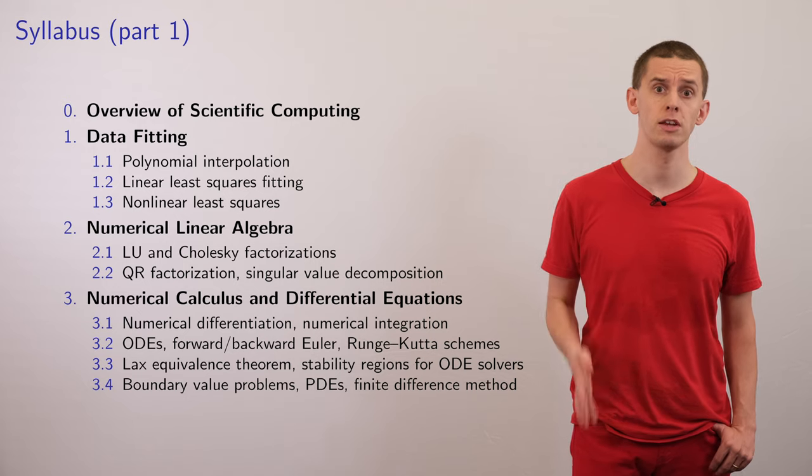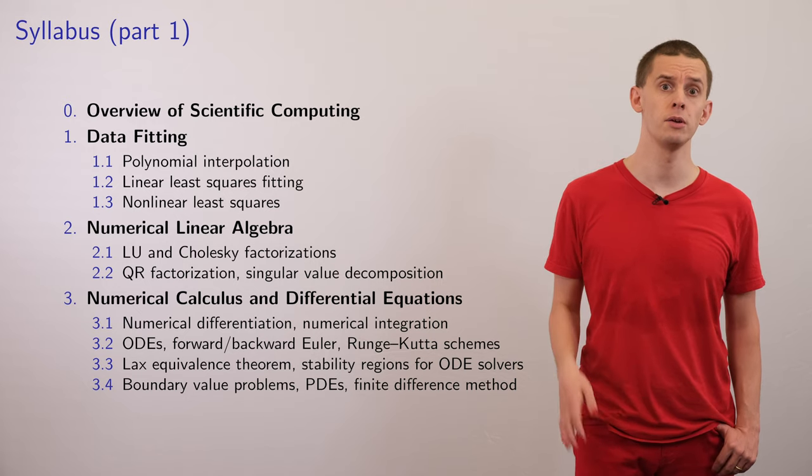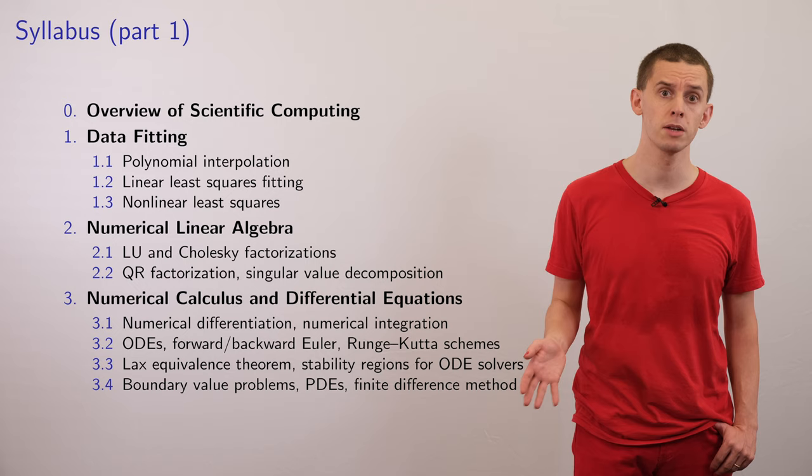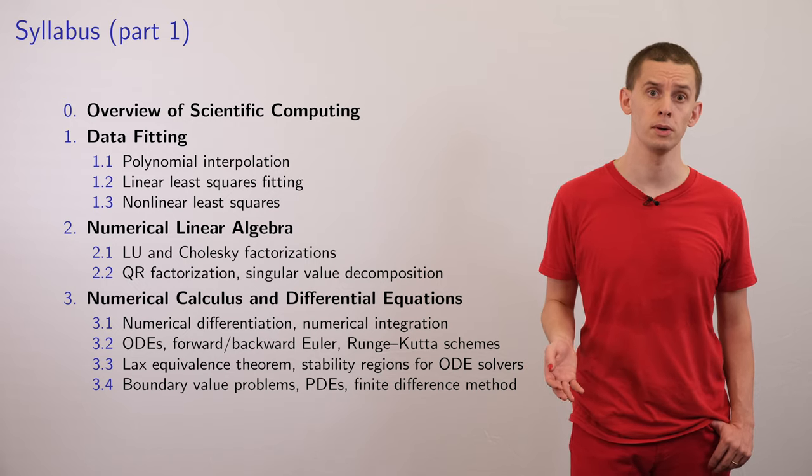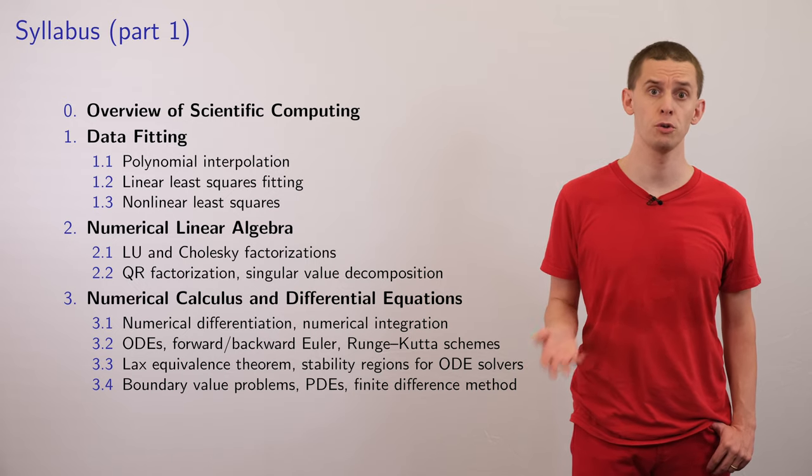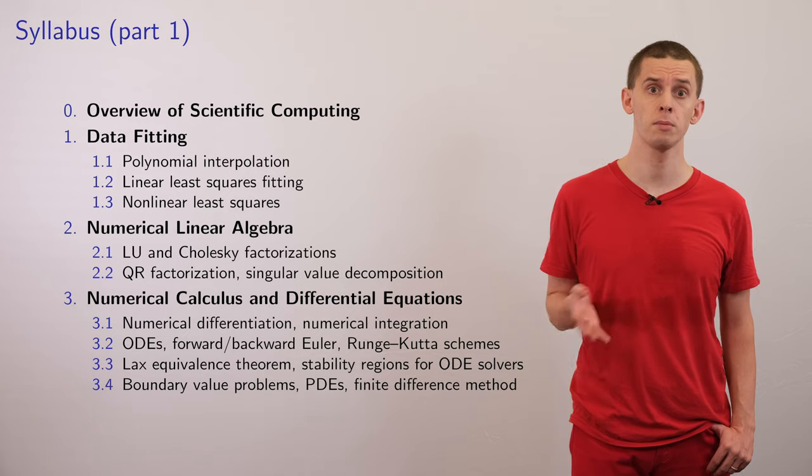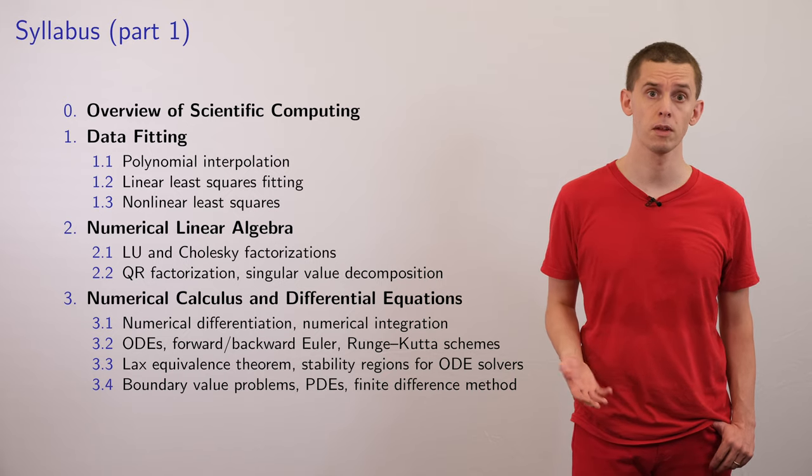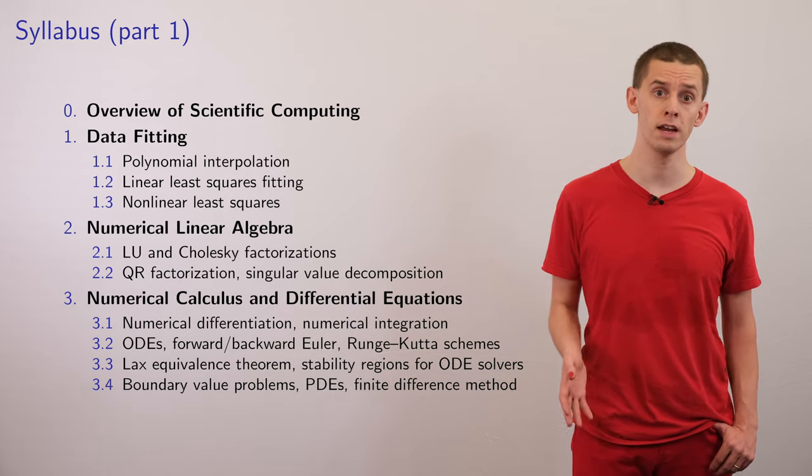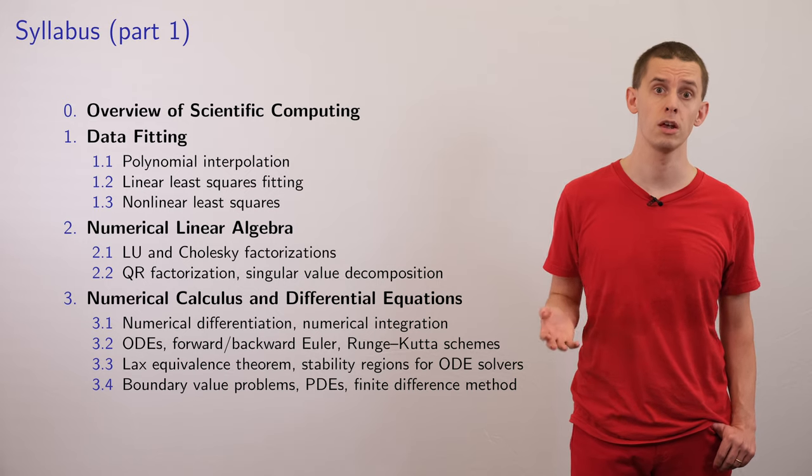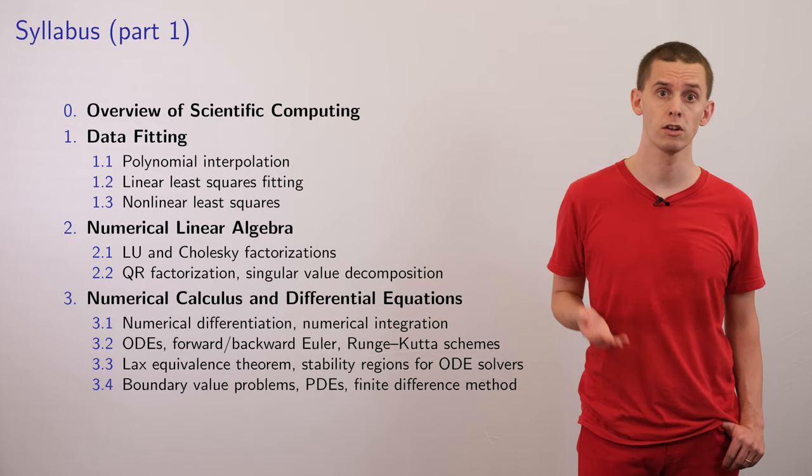AM205 is structured around six units. There's an introductory unit zero that covers some of the fundamental ideas in scientific computing, such as how computers process arithmetic and the typical errors that we expect to get. Unit one for the course will cover data fitting, and we'll look at topics such as polynomial interpolation, splines,